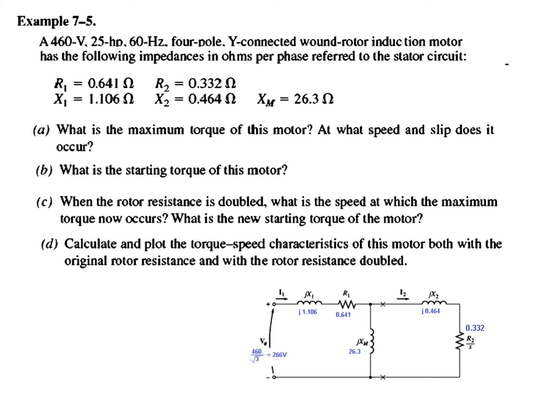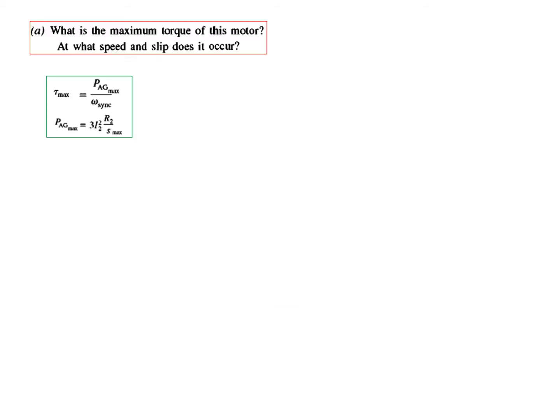The question is given for 460 volt, 25 horsepower, 60 hertz, four pole Y-connected wound rotor induction motor. Whenever voltage is written it is line to line voltage. First thing we convert line to line voltage into phase voltage by dividing by root 3, so it becomes 266 volts. I have written all the parameters in this equivalent circuit and we have to calculate these four terms one by one.